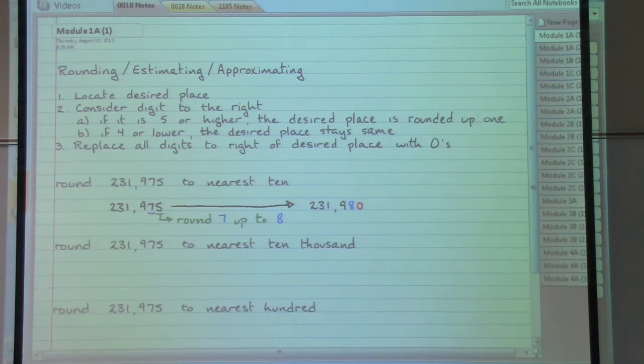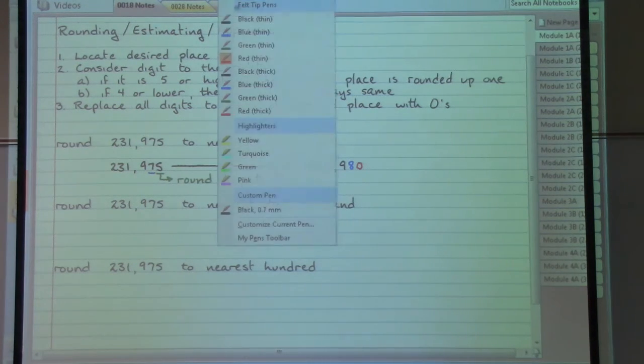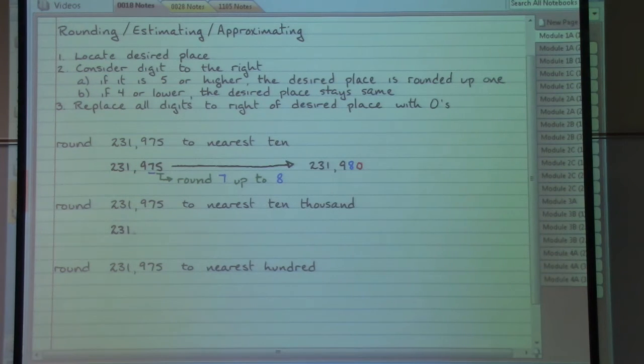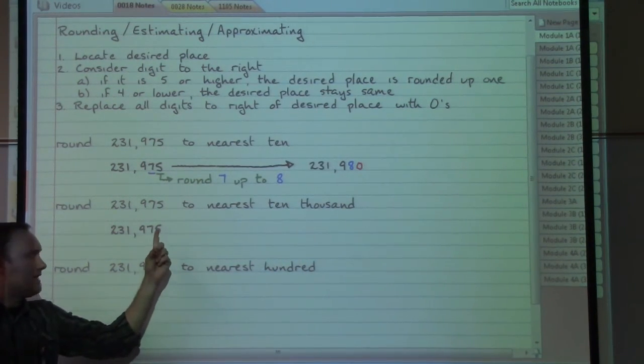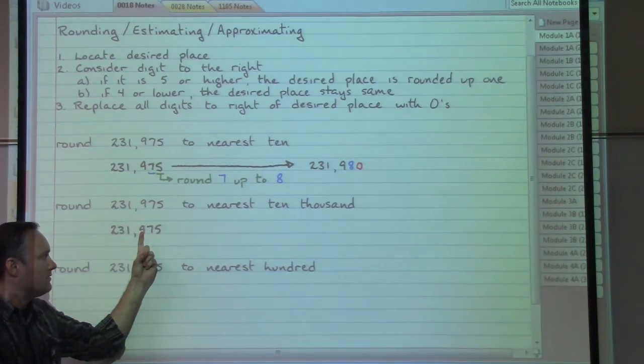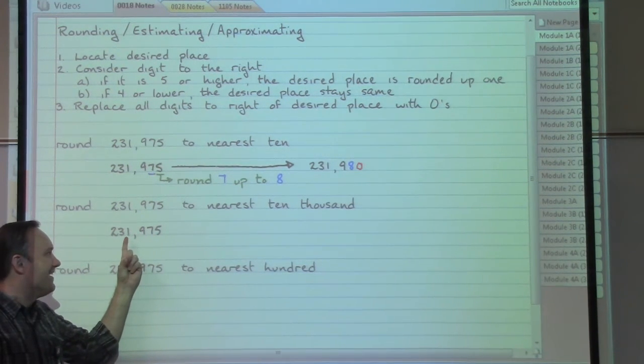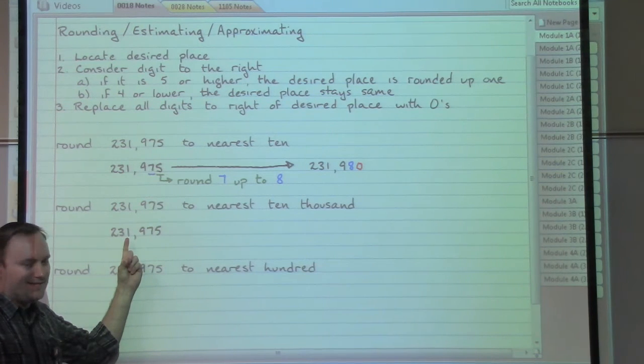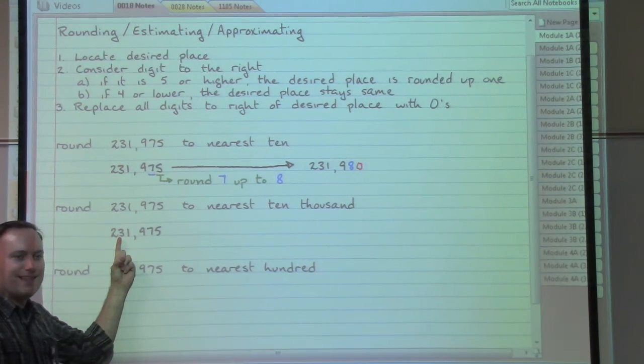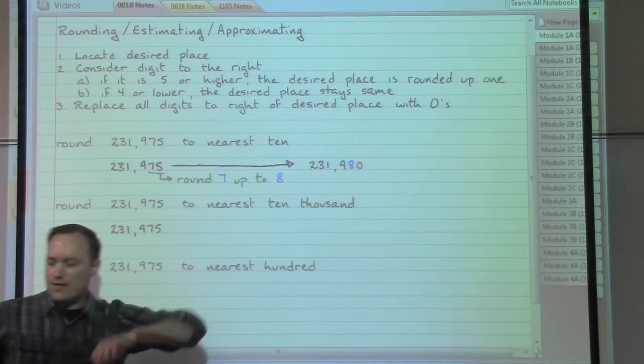Let's look at a couple more examples where we follow these sorts of rounding steps, and look next at rounding 231,975 to the nearest ten thousand. So what we want to go looking for is the ten thousands place. Starting at the end, we have the ones place, in front of that the tens place, in front of that the hundreds place. Then in front of the comma we have the thousands place, and in front of that we have the ten thousands place. So the three is the desired place that we would want to locate.